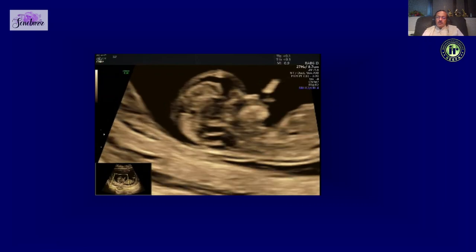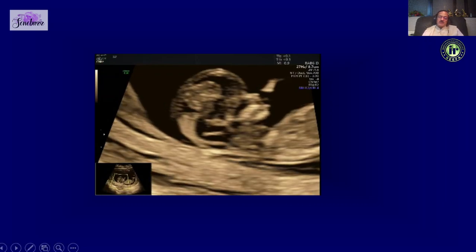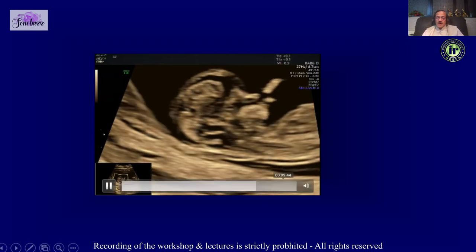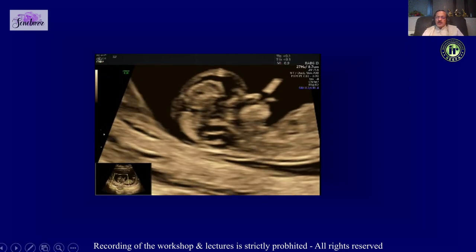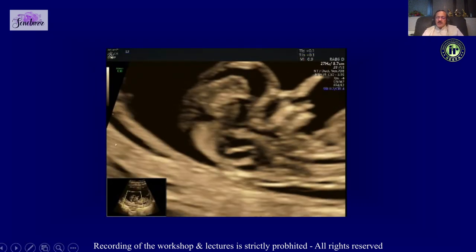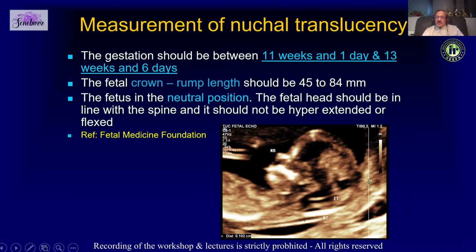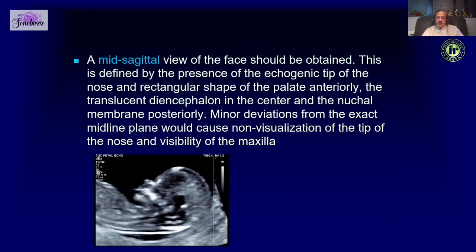To measure NT, hope that the fetus gives you a good position — sometimes you just have to wait. Once you get the fetus in the right position, gradually zoom in until you get a good nuchal translucency section where you should see the head and only the upper mediastinum. Timing should be between a CRL of 45 to 84 mm.